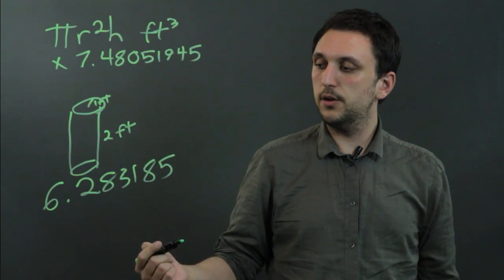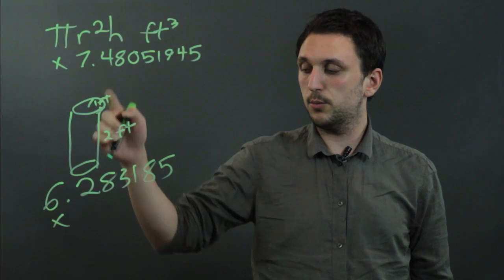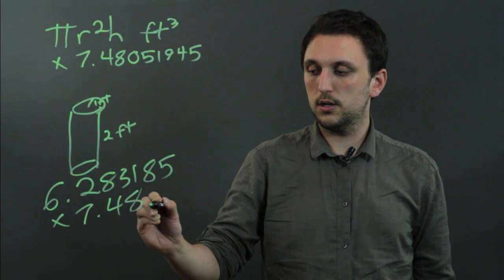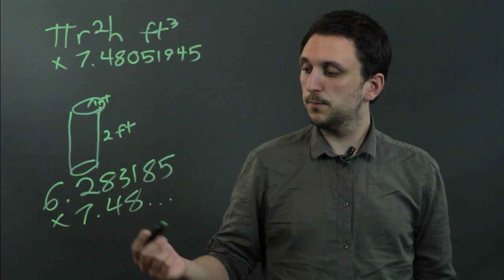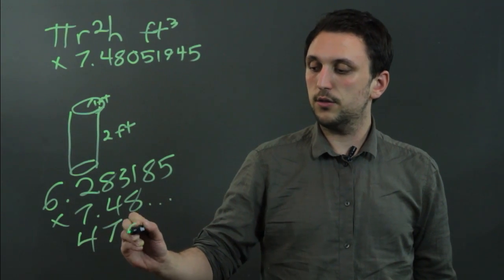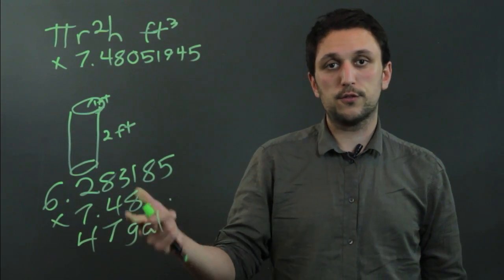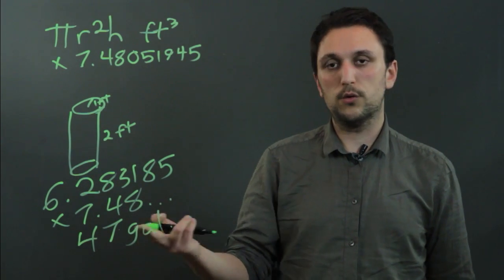and we take this and we multiply by 7.48, and so on, which gives us 47 gallons. It actually gives us 47.001, so we can round to 47.